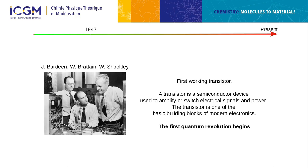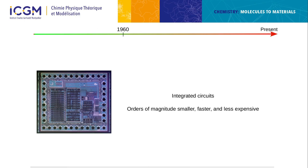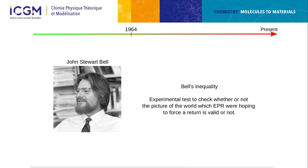In 1947, the first working transistor was developed — the start of the first quantum revolution. All components of classical computing were developing thanks to quantum mechanics, but this is not quantum computation at all. This led to integrated circuits, enabling calculations that were orders of magnitude smaller, faster, and less expensive.